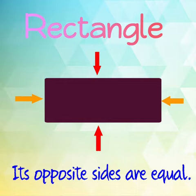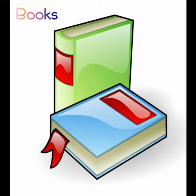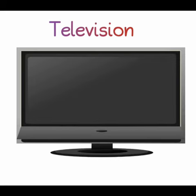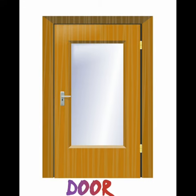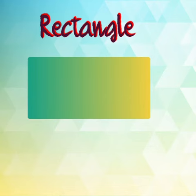We have many objects that are rectangular in our house, like books, TV screen, our door, etc. There are many things that are rectangular in shape.